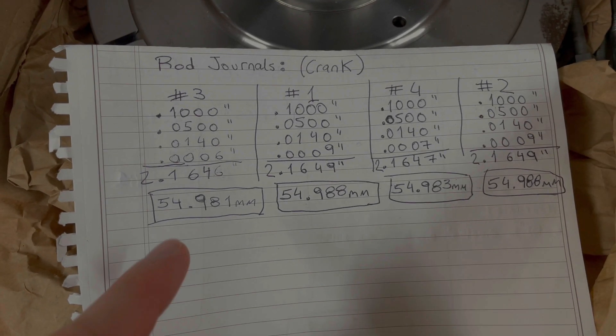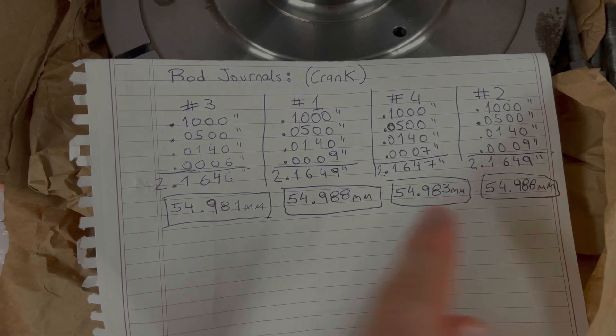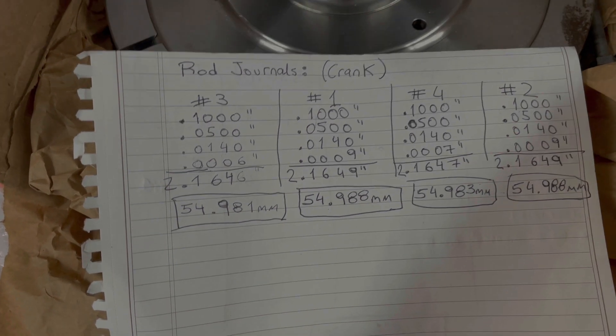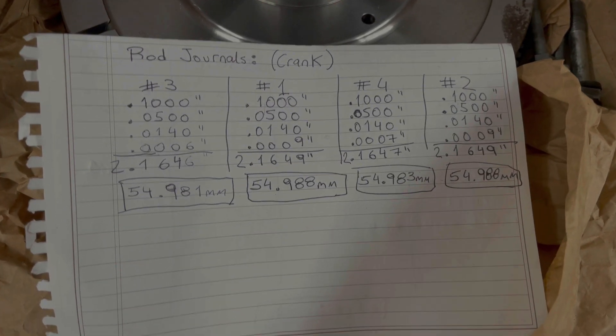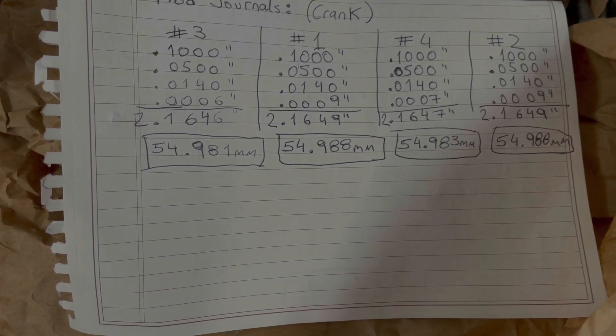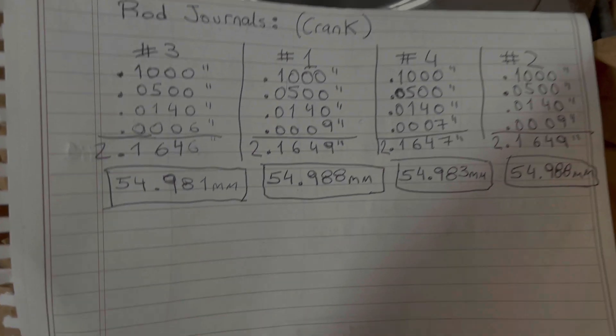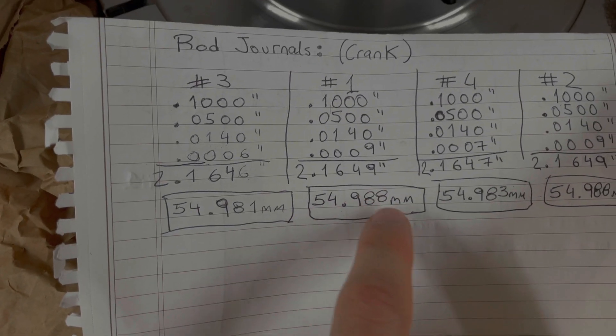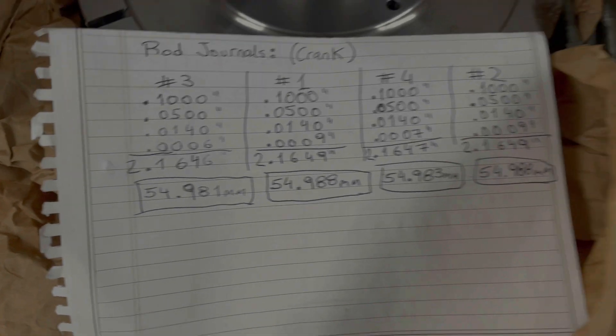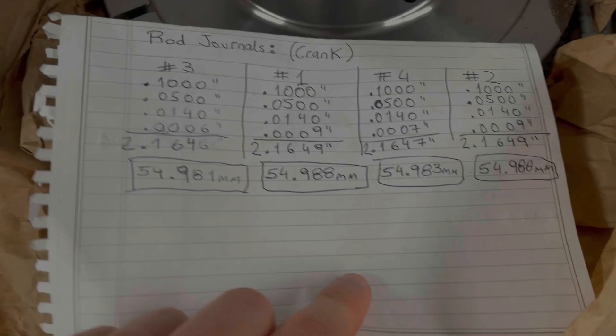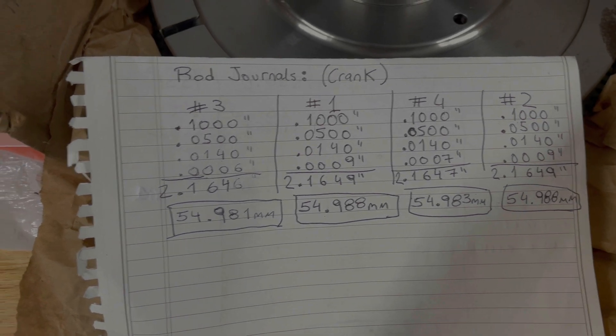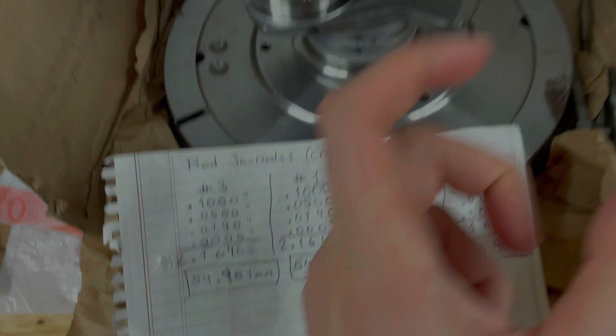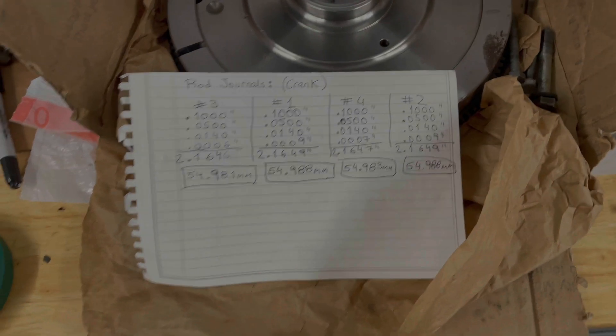They're all barely under 55 millimeters, which is the standard. I assume CB Performance does it on purpose to give you some clearance. I don't think it's supposed to be exactly 55.0, but I only care if the difference between the journal and the bearing falls within the spec range.